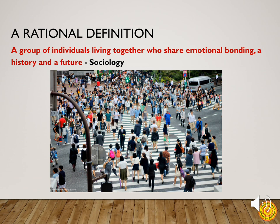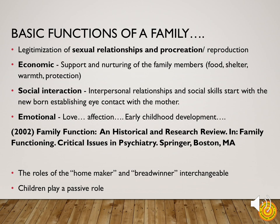Looking at a more rational and inclusive modern sociological definition: a family is a group of individuals living together who share emotional bonding, a history and a future. From here we move on to look at the basic functions of a family.